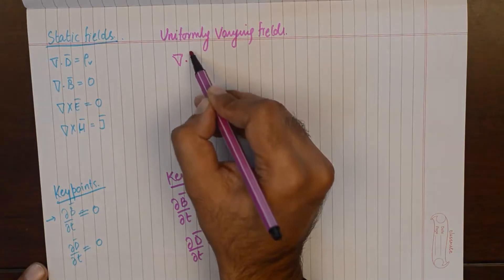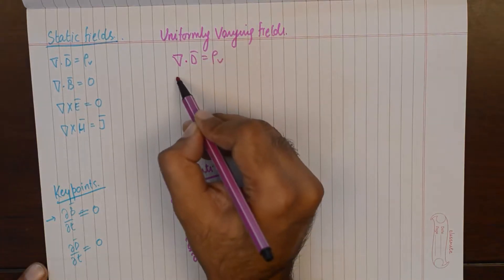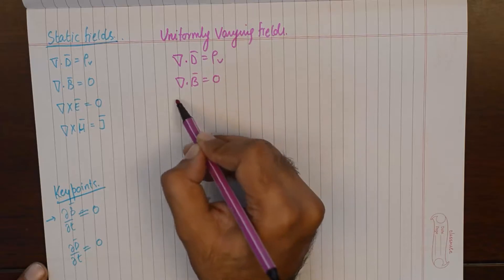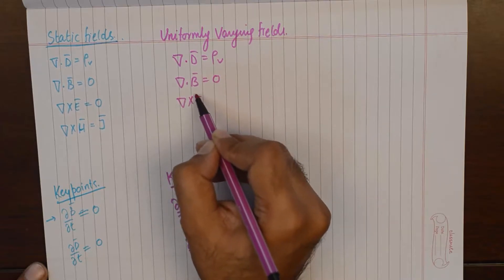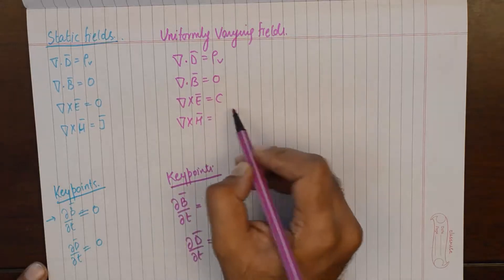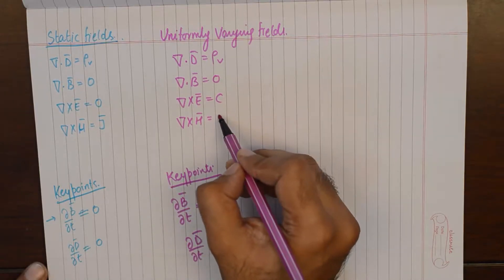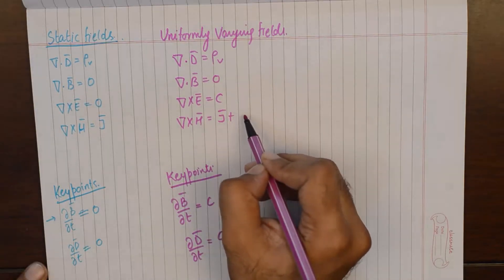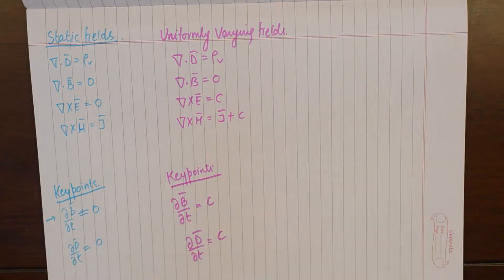But they are varying uniformly, so they can be substituted with a constant C. And Maxwell's equations take up the form of uniformly varying fields, something like this.